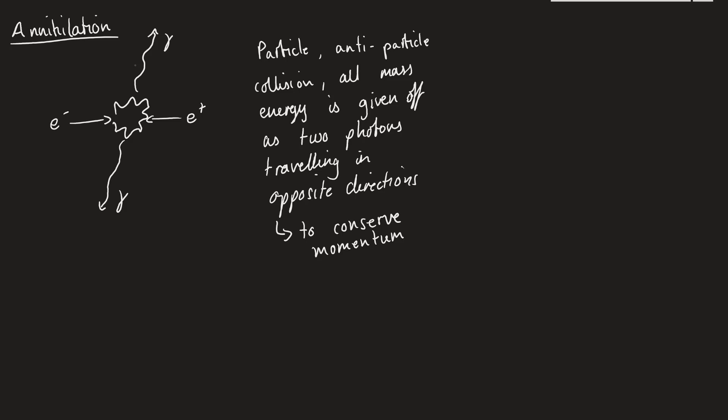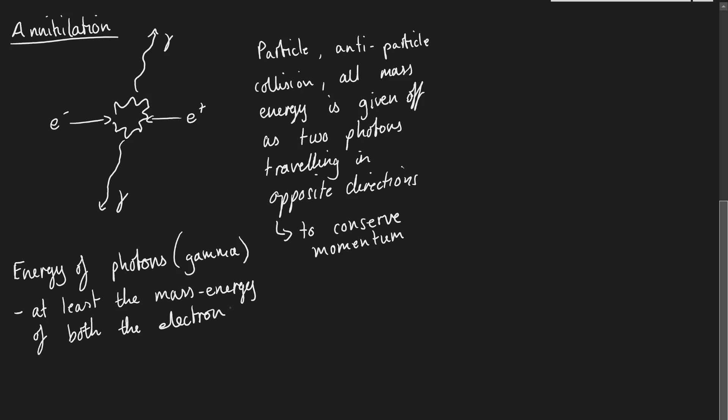One thing that is key is that the energy that's given out, so the energy of photons. So these photons are usually gamma rays. So energy of the photons is usually in the gamma section of the electromagnetic spectrum. It has to be at least the mass energy of both the electron and positron. Because even if these things are stationary and they touch each other, they'll still have the potential energy. So all of that potential energy has to go into those photons.